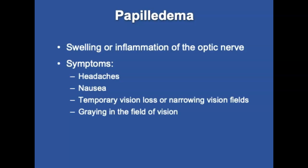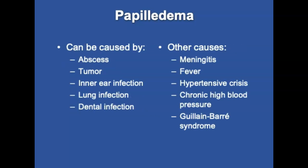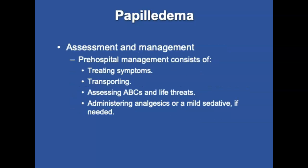Papilledema results from swelling or inflammation of the optic nerve at the rear of the eye. Symptoms include headaches, nausea with possible vomiting, temporary vision loss, narrowing vision fields, or a graying in the field of vision. It can be caused by tumors, abscesses, inner ear or dental infections, meningitis, fever, high blood pressure, or Guillain-Barré syndrome. Diagnosis will be needed by an ophthalmologist or physician. Pre-hospital management involves treating symptoms, assessing ABCs, and transporting.